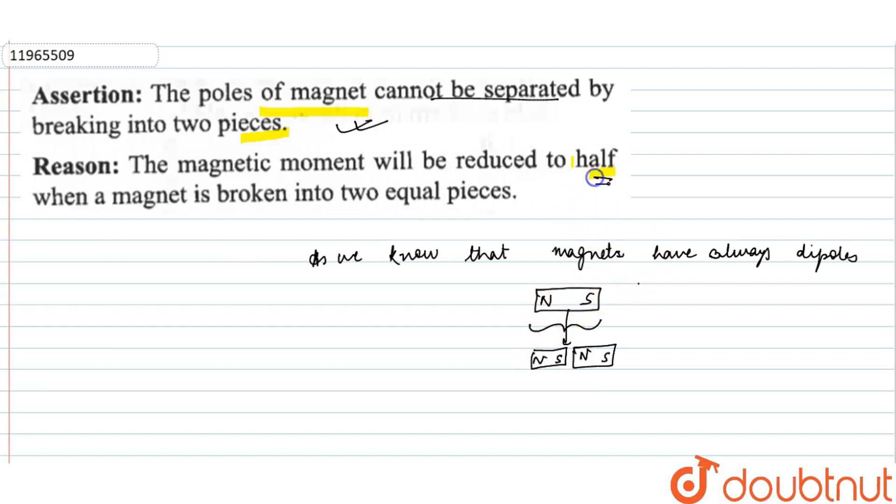Though, the magnetic moment is what? It's I into area. So if area is reduced to half, that means the magnetic moment will be reduced to half. So the reason statement is also correct.